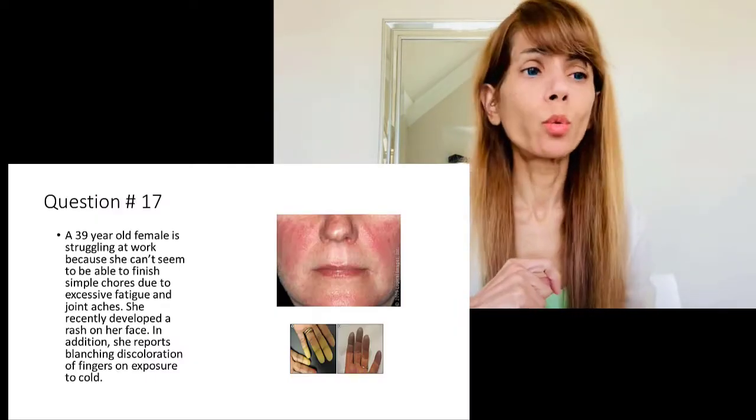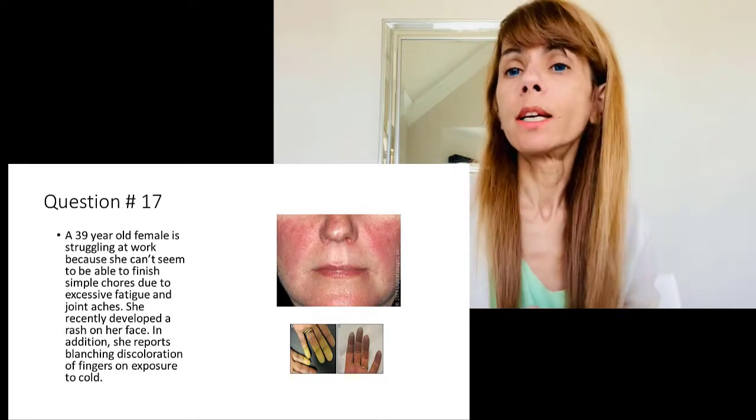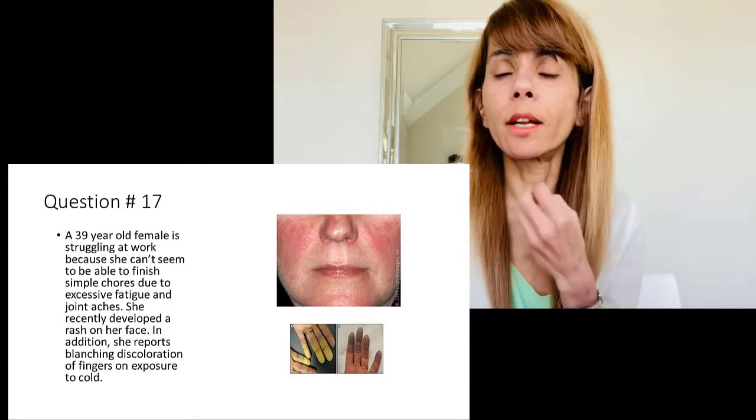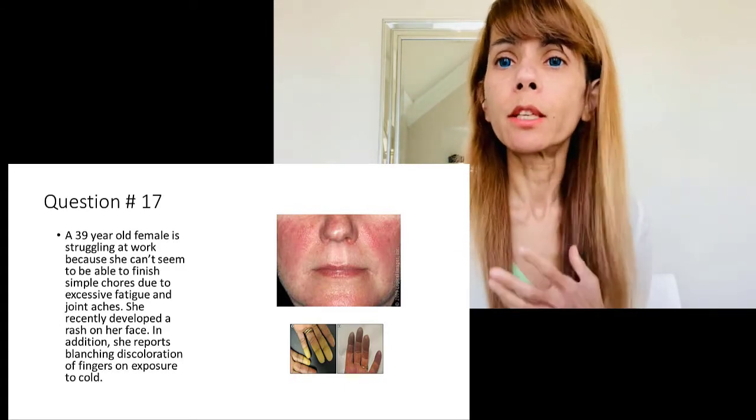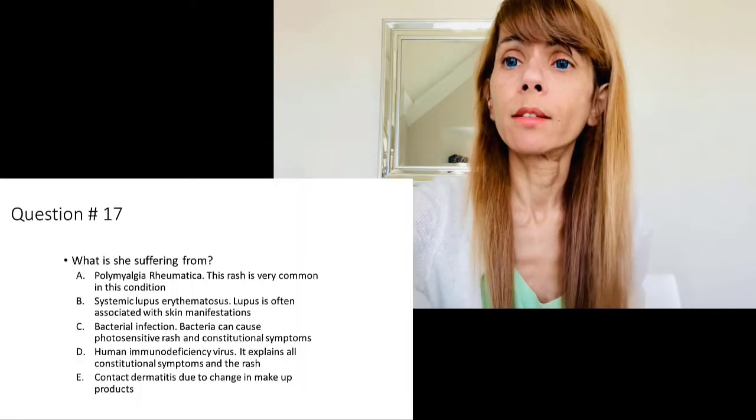The next question is a 39-year-old female struggling at work due to extreme fatigue. She has a butterfly rash on her face, and when you examine her fingers there is discoloration and blanching. The question asks what condition she has. Polymyalgia rheumatica is ruled out because it involves different joint pain distribution. The correct answer is lupus — systemic lupus erythematosus. She has a butterfly rash, joint aches, photosensitivity, cold intolerance, blanching of the skin with cold exposure indicating vasoconstriction, and fatigue impacting daily activities.